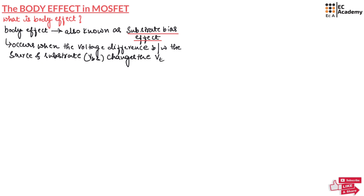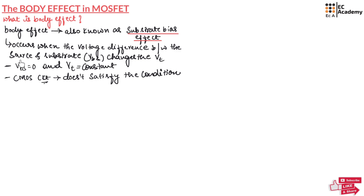This effect is known as body effect. In a MOSFET, we always assume that the source and the substrate are at the same potential, which means VBS should be equal to 0 and VT will be constant. But in a CMOS circuit where we are connecting MOSFETs in series, this condition does not satisfy.